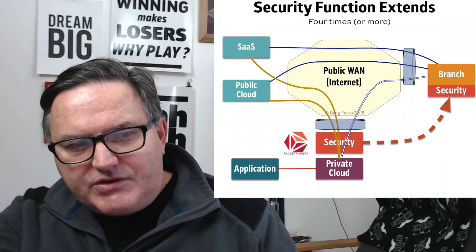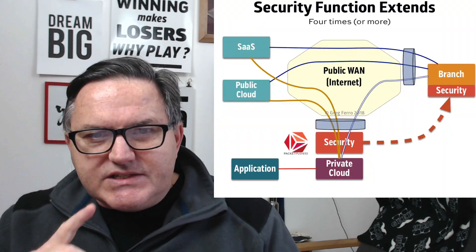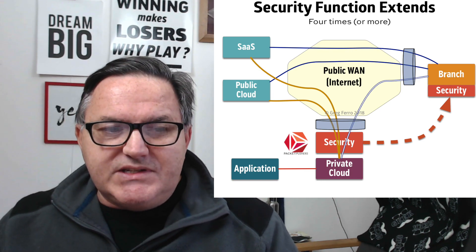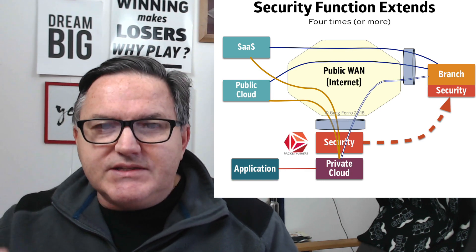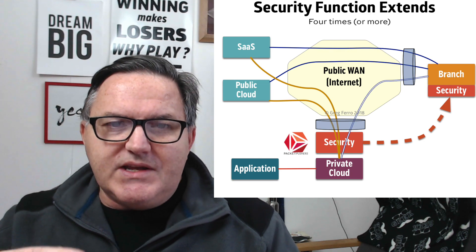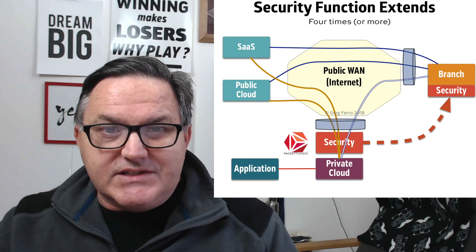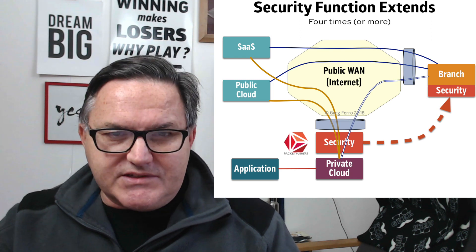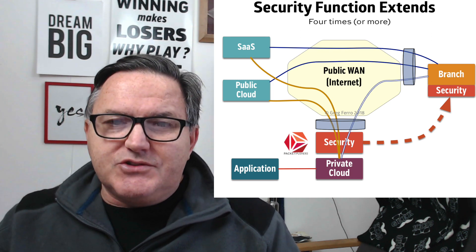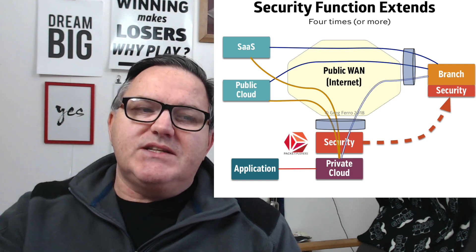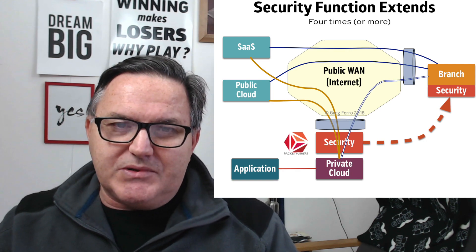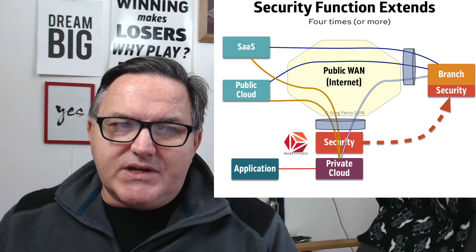Now, when you think about the security function — and I've got another diagram here — what we're actually seeing SD-WAN providers do, the people who make SD-WANs, is actually implementing the security into their SD-WAN appliances. So they're now able to provide various ways — there are different ways of doing it — some of them do it on appliance, some implement something quite simple. But what they're doing is extending the security function into the SD-WAN appliance. This is actually quite a bit simpler than the private WAN networks of today.